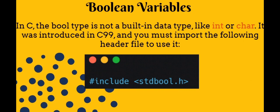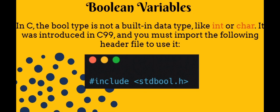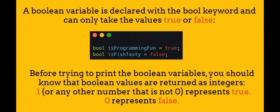Boolean variables. In C, the bool type is not a built-in data type, like integer or characters. It was introduced in C99, and you must import the following header file to use it.